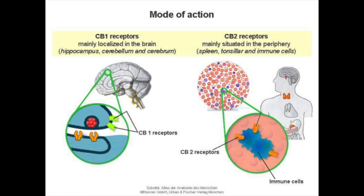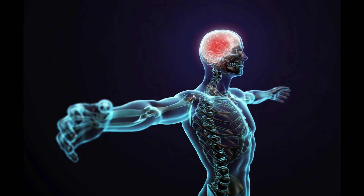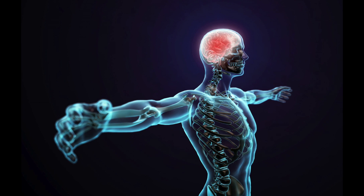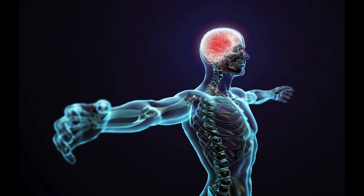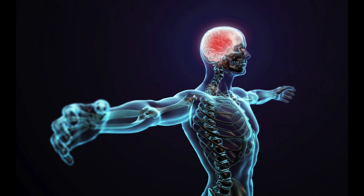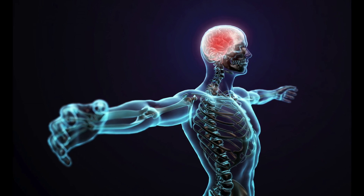Both are capable of binding to CB1 and CB2 receptors, but differ in their affinities for these receptors — i.e., how likely they are to bind to and activate each receptor. Endocannabinoids are short-order neurotransmitters, meaning they are synthesized on demand. In other words, endocannabinoids are only produced when the body signals that they are needed, and their presence is transient.